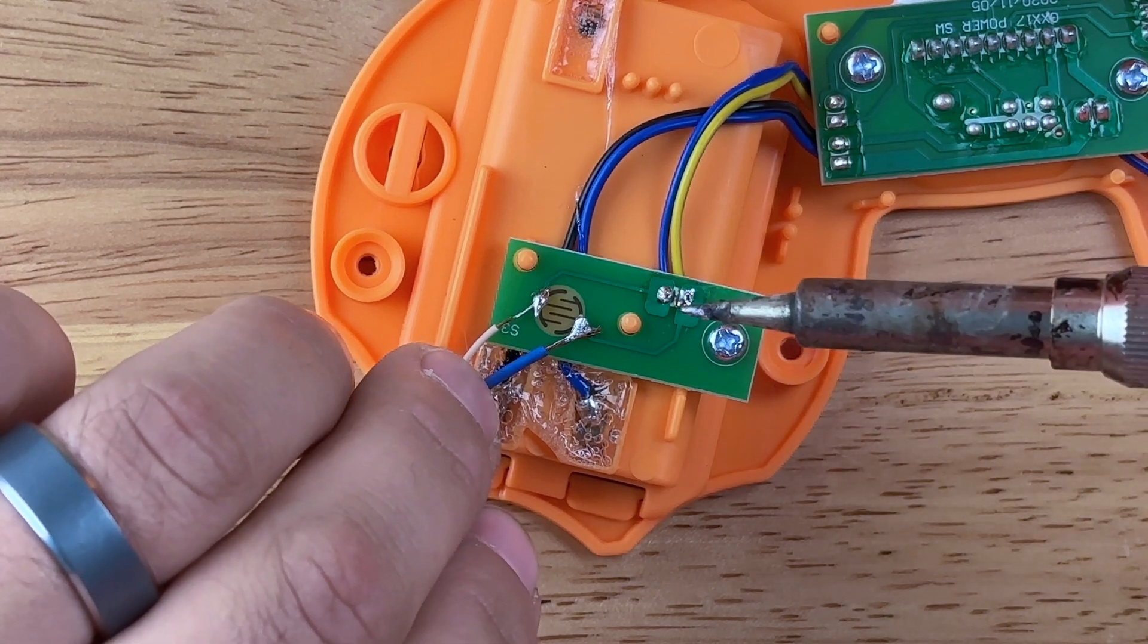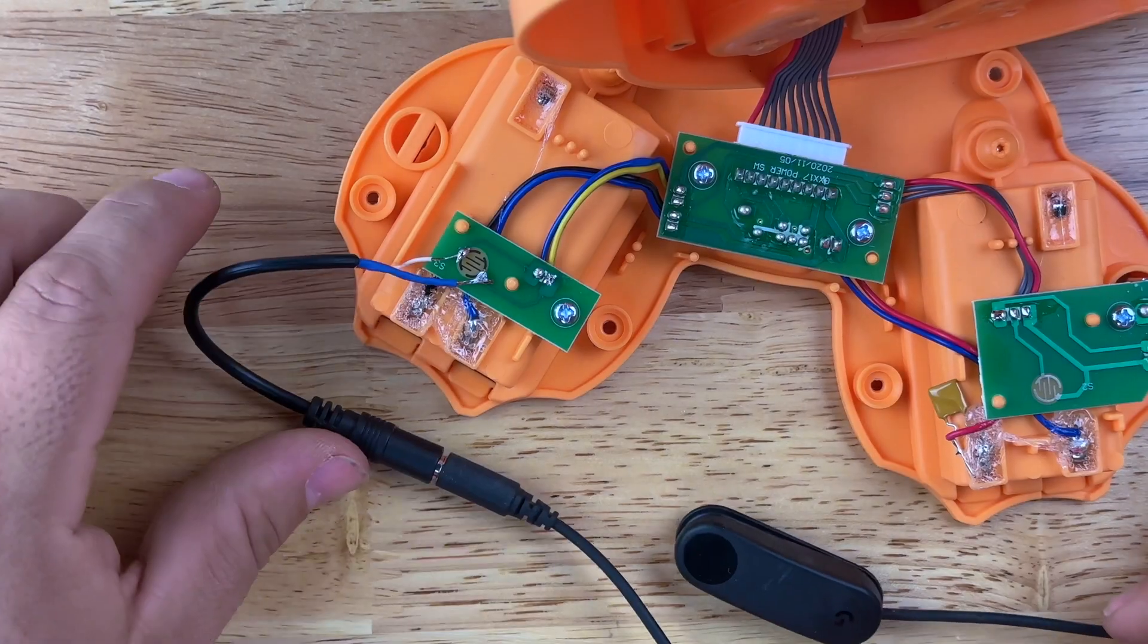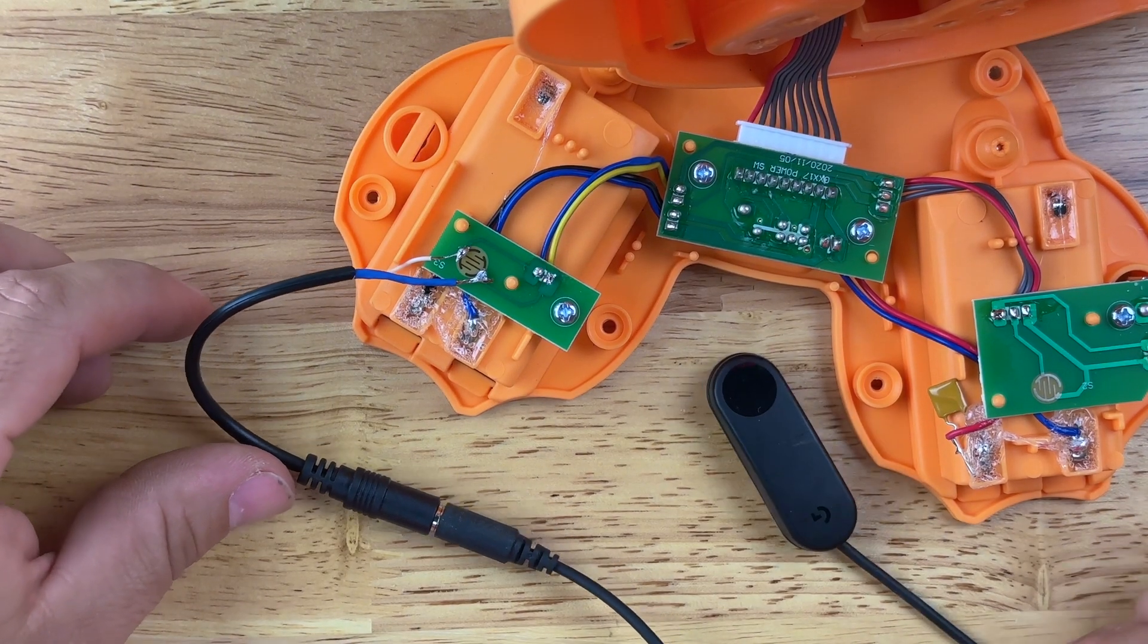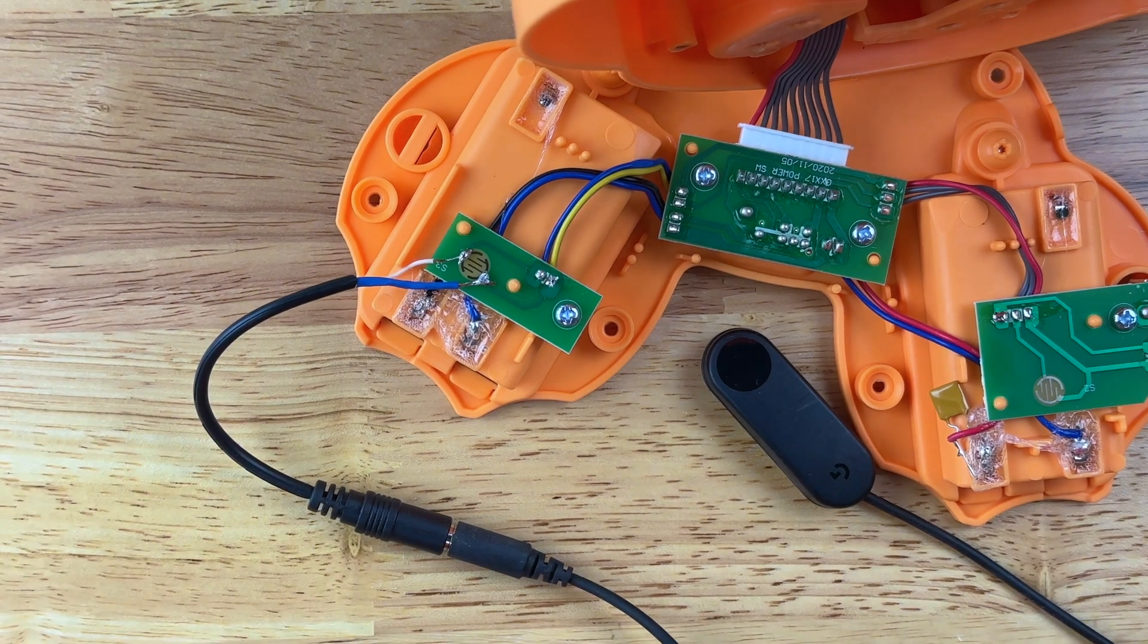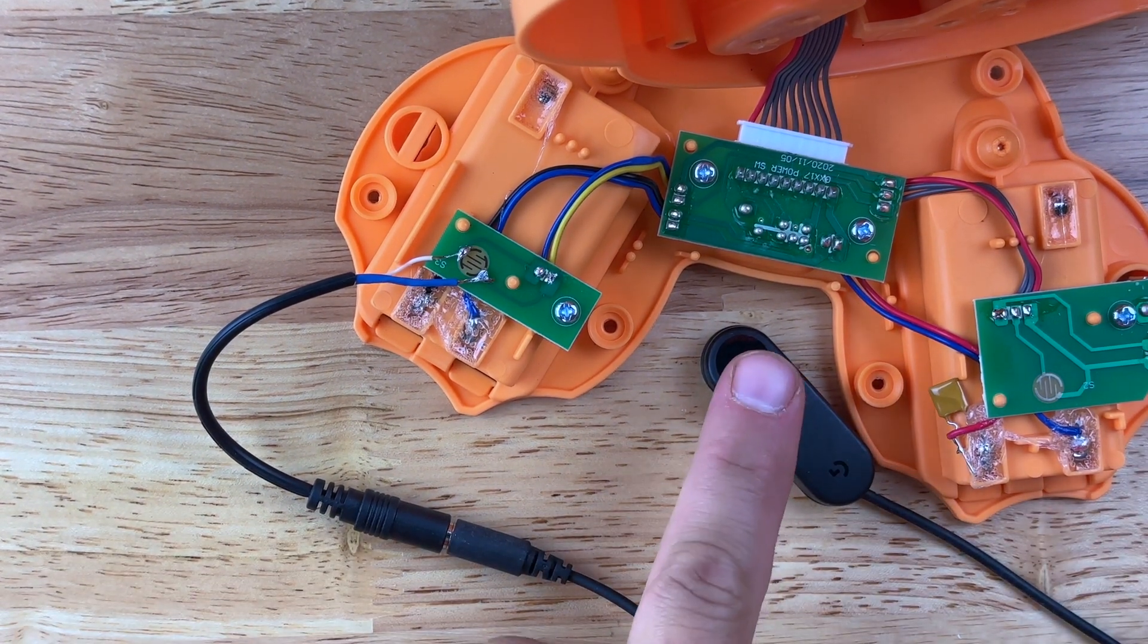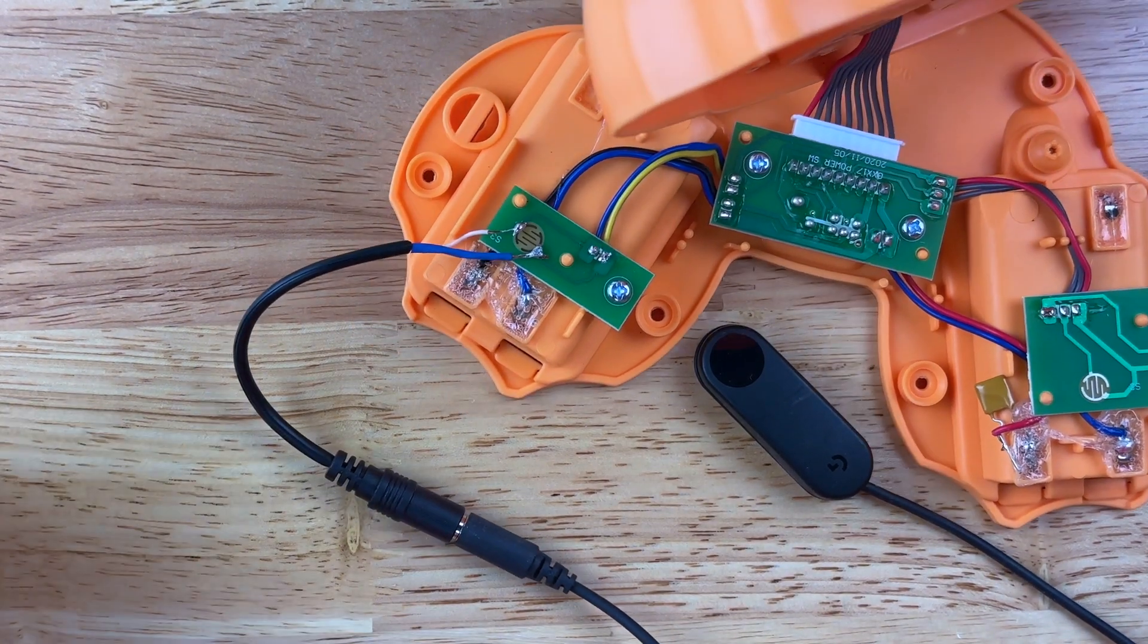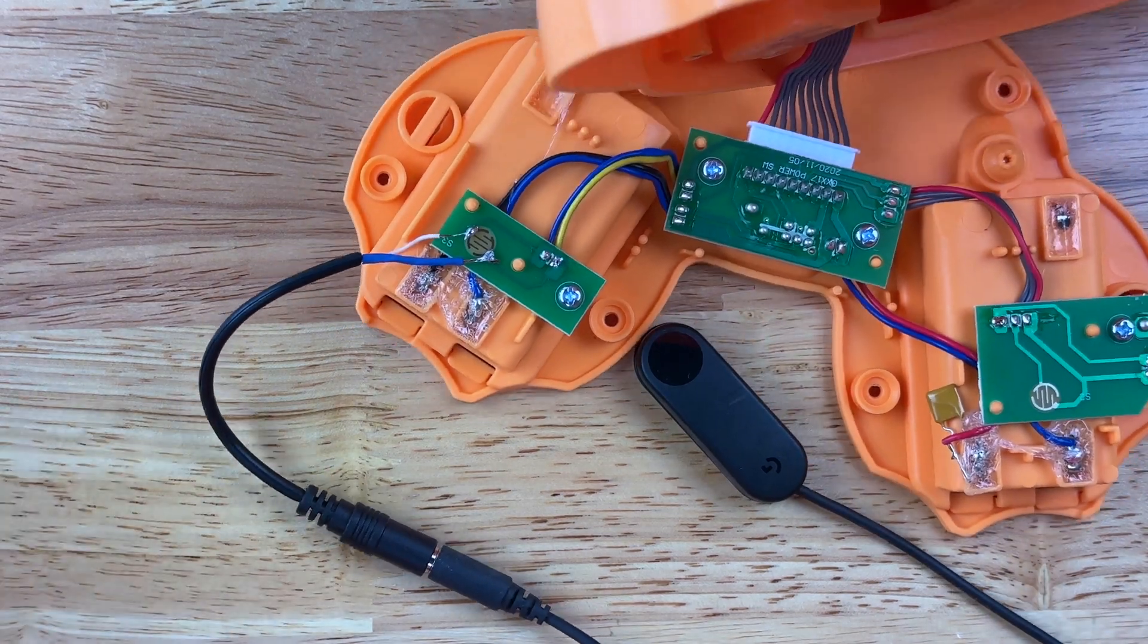And just like that, that side is on there as well. So the last thing I need to do is make sure that everything works. So I brought a button over, I've got it hooked up, I made sure my toy is on, and then if I press my button it operates the toy as expected, and I know that I'm good to go to put everything back together.